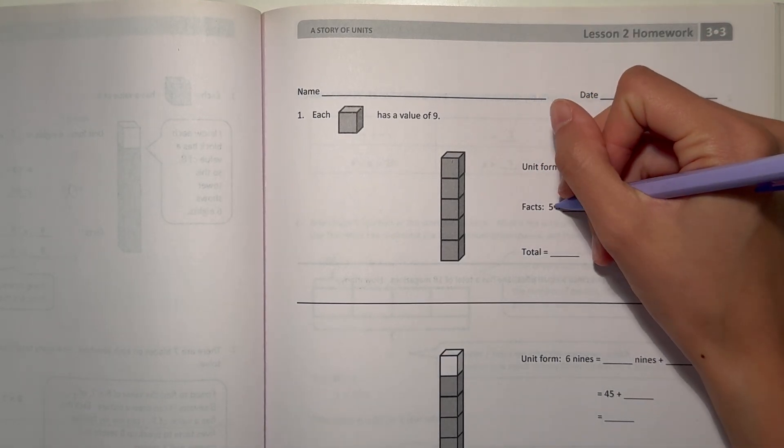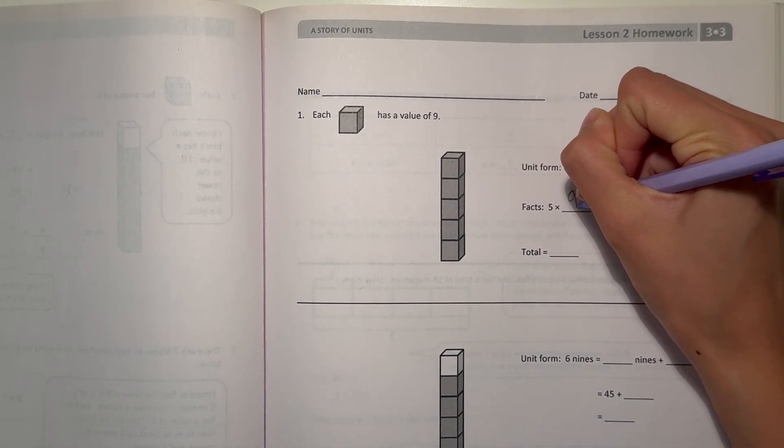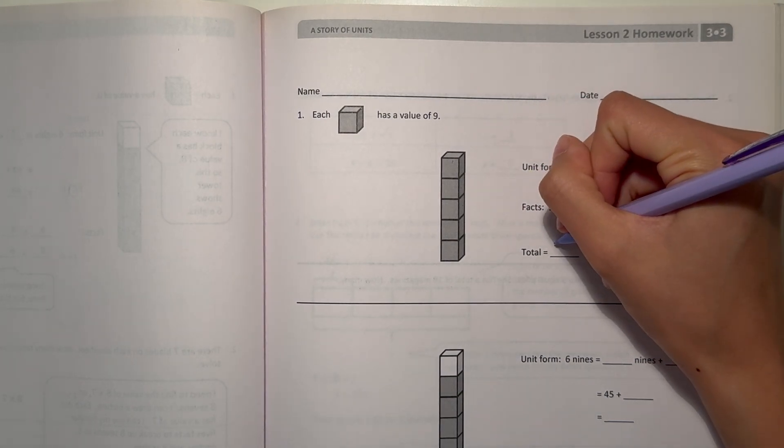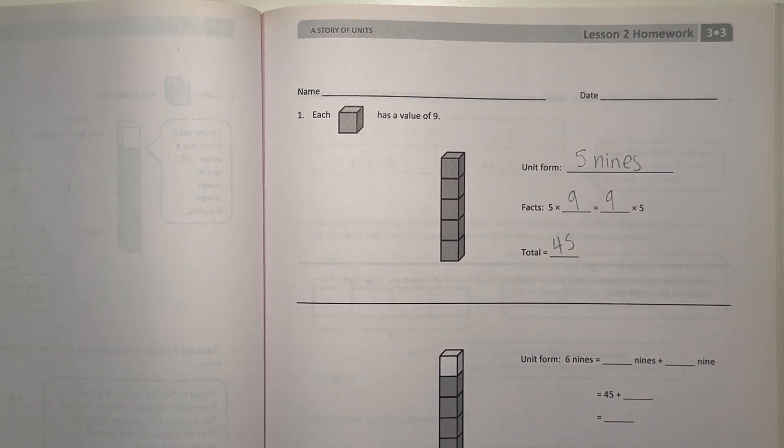And for our facts, we have 5 times 9 is the same as 9 times 5, which is 45. So our total here is 45.